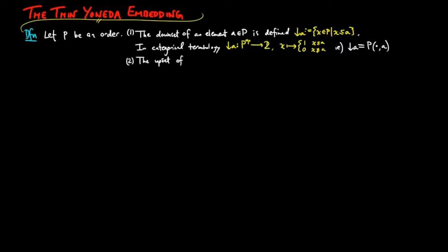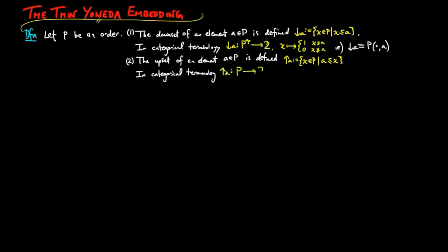Two: the upset or upper segment of an element a in p is the set of elements x in p such that a is less than or equal to x. In categorical terminology, this means that the upper segment on a is a functor from p to 2, i.e., it is a covariant representable pre-sheaf on a.